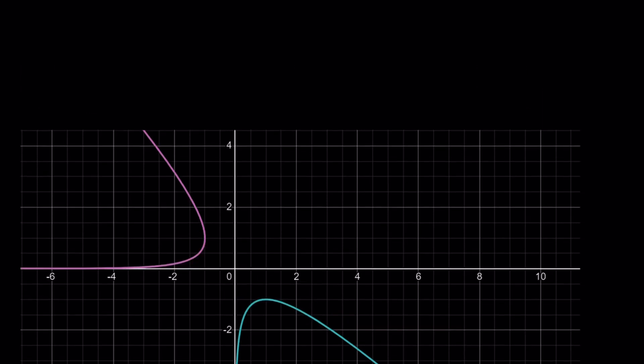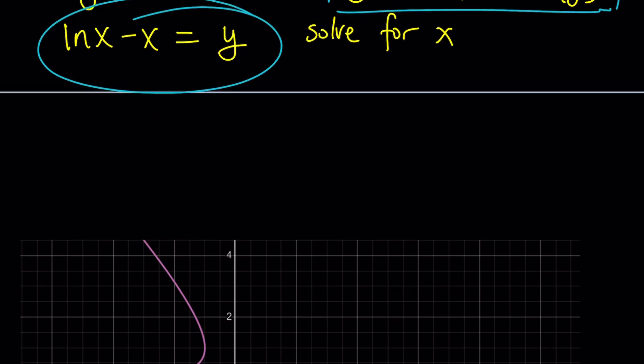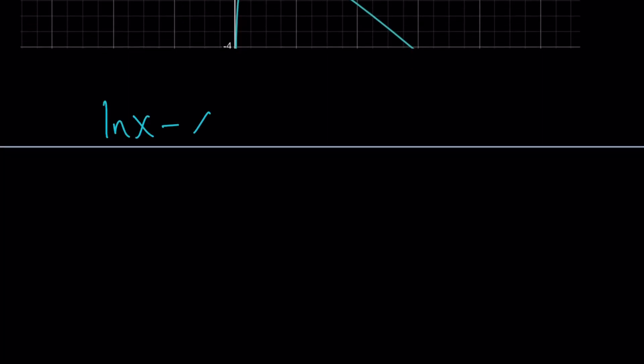So let's take it from here. We have ln(x) - x = y. Let's copy that. From here, our goal is to solve for x. So here's what we're going to do. If you try to solve this algebraically, you're not going to be able to solve it because this is a very non-standard equation. Look at that. We have the ln, we have the x, and you can't really extract the x from here.